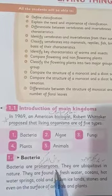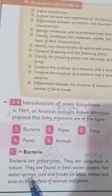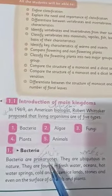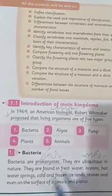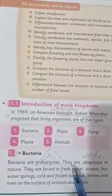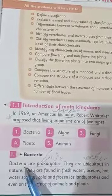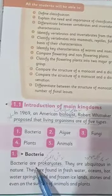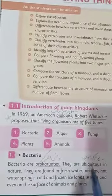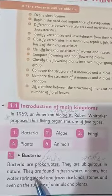Bacteria are prokaryotes. Prokaryotes means they are single-celled — it is only one cell. As you know, all organisms are made of cells — cells are the building blocks of organisms, like bricks are to buildings. Bacteria are organisms made of only one cell; we call them prokaryotes. They are ubiquitous, meaning they are found in every place in our environment. You know that whenever we fall ill and get infected, we are infected with some bacteria.